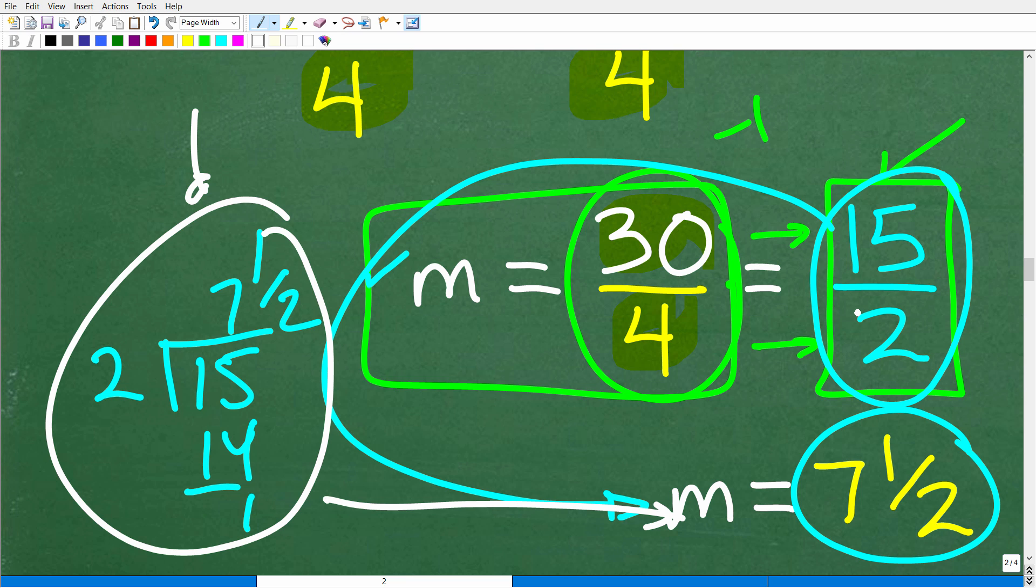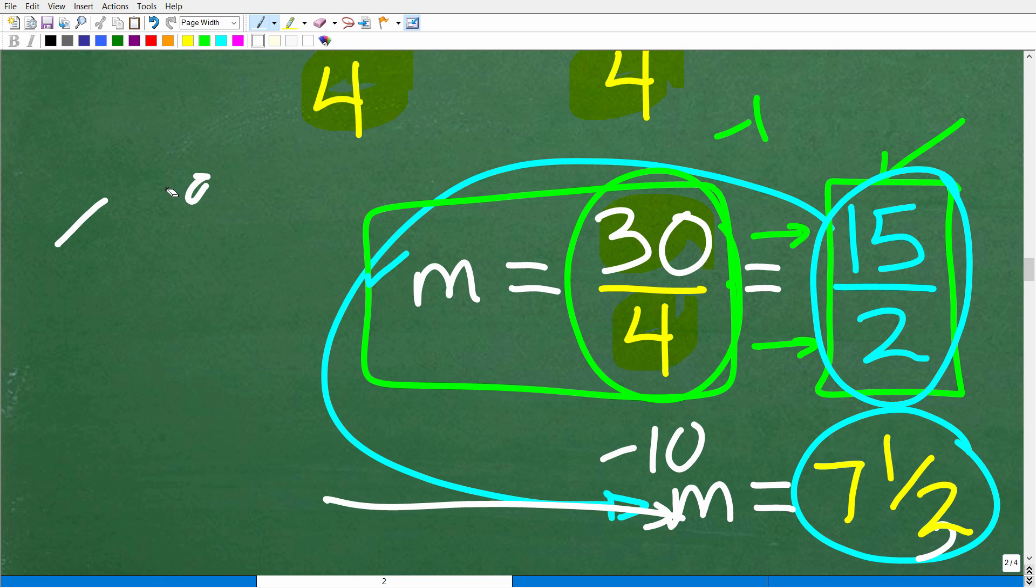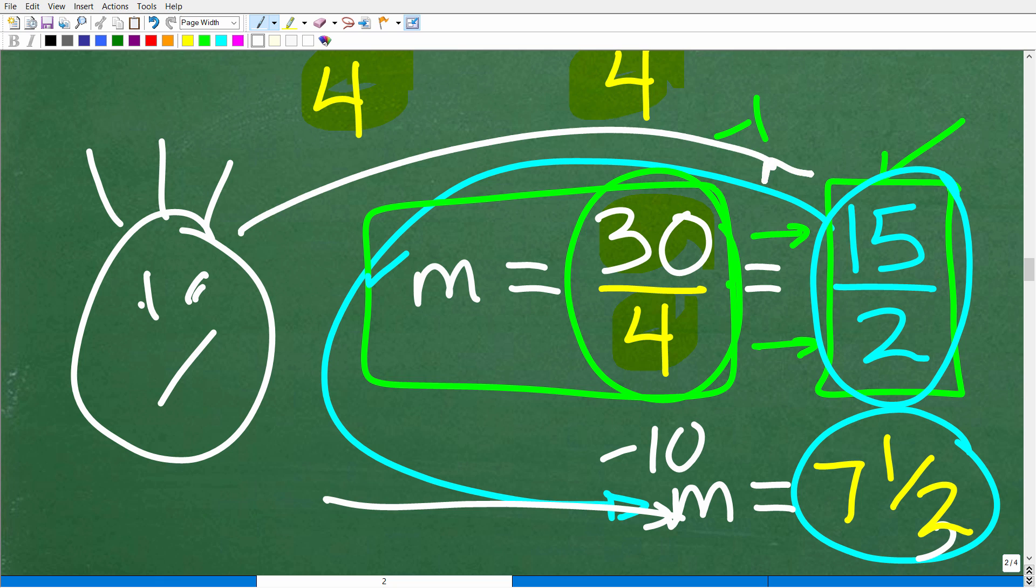But some students feel compelled that they have to take this extra step. This takes time. And also, it's an opportunity for you to make a mistake. And I've seen this over and over again. The student will have the right answer here and then they give me something like seven and one thirds and then I got to take minus 10 off and it's really not a good situation. The student will be like, why did you do that? I had the right answer. Look, I had that right answer here. I said, yeah, but you turn this in. You turned in the wrong answer.